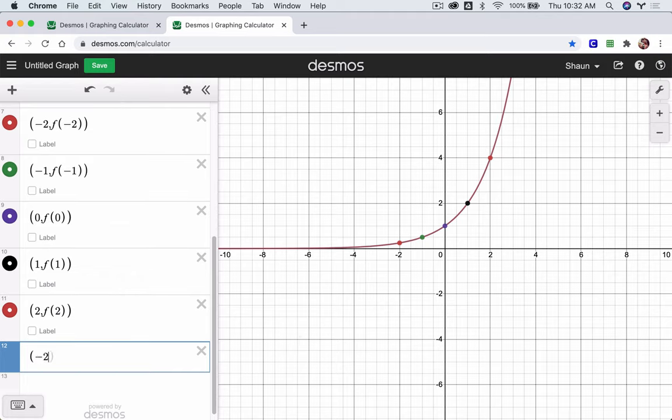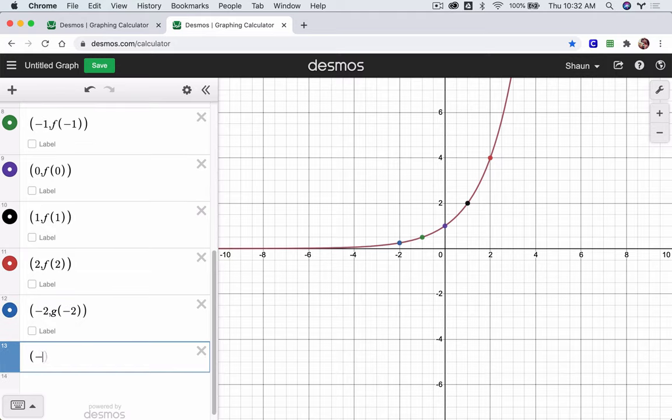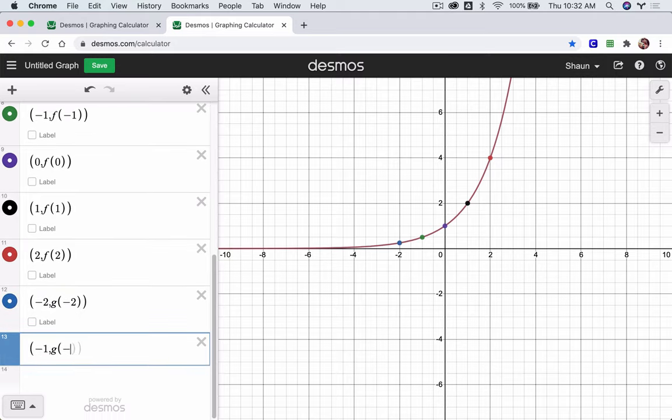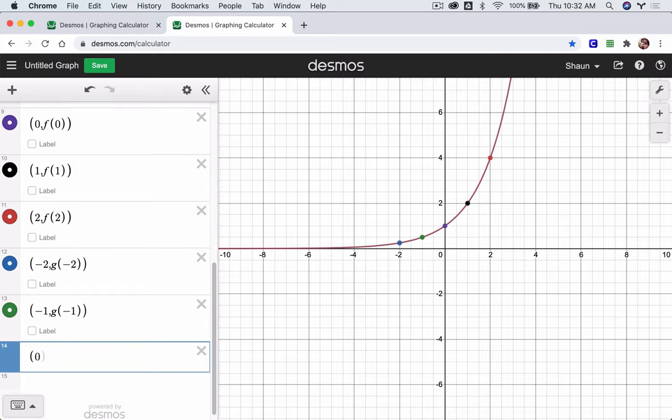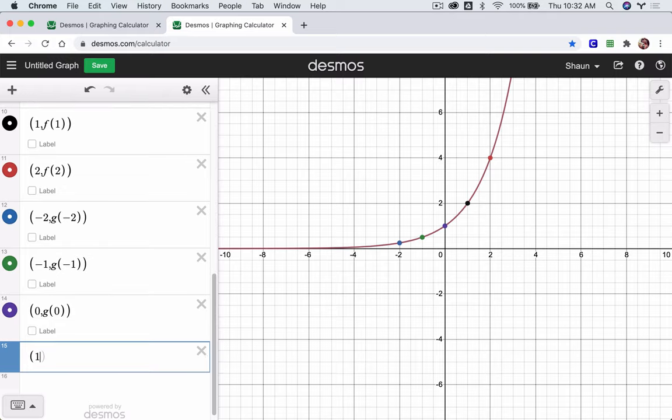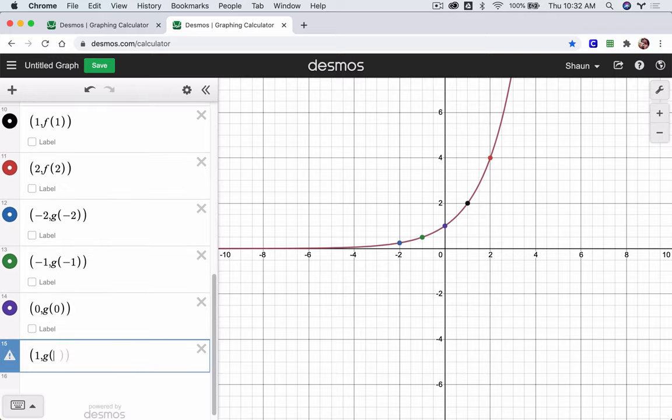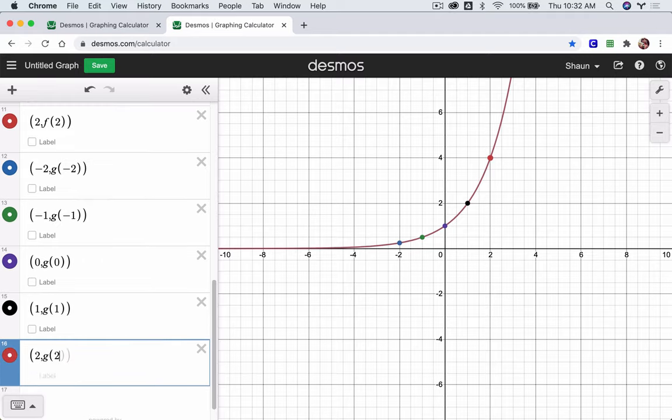So I go, here it's the same, but it can be different. Negative 2, g of negative 2. Negative 1, g of negative 1. And you don't have to type the second parenthesis. It'll do it for you. 0, g of 0. And 1, comma, g of 1. I just stopped typing there. Hit enter. And then 2, g of 2.